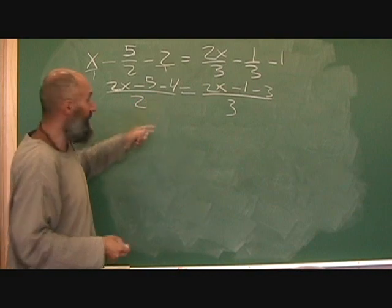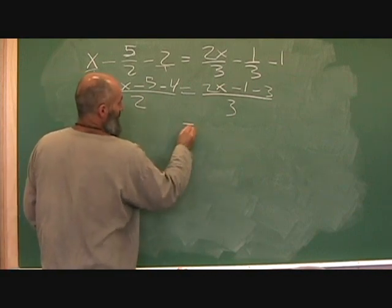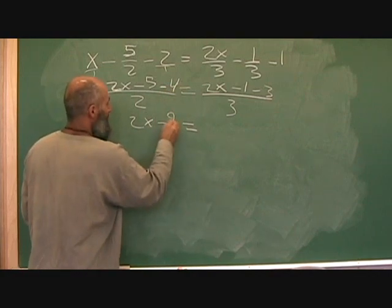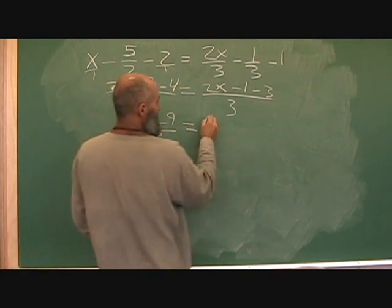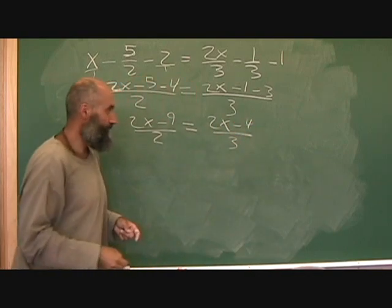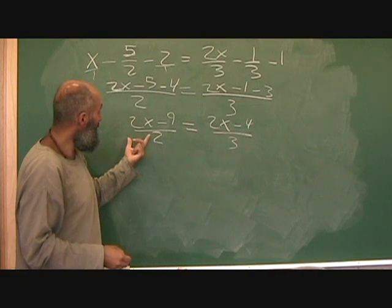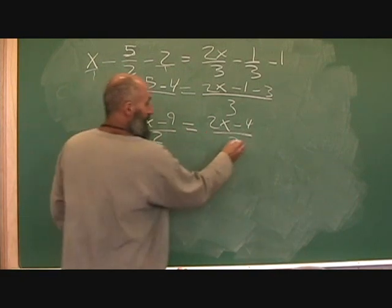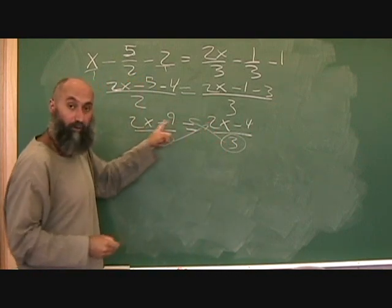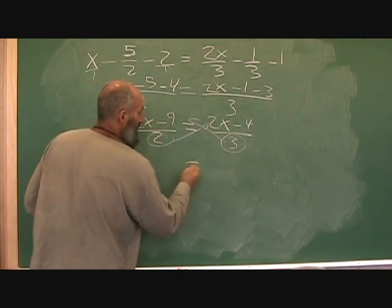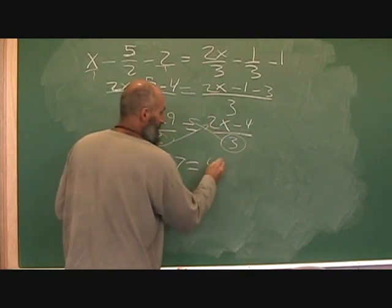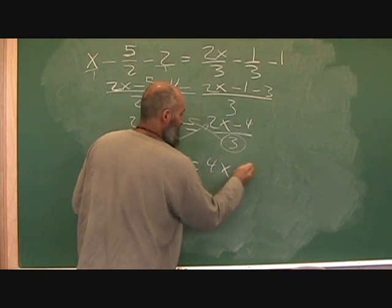Now combine your like terms. Line up your equal sign again. Two x - negative five minus four is negative nine - over two, is equal to two x minus four over three. We've got one fraction equal to another fraction, so we're going to cross multiply. Three comes up and multiplies both terms, giving six x minus twenty-seven. On this side it's going to be four x minus eight.